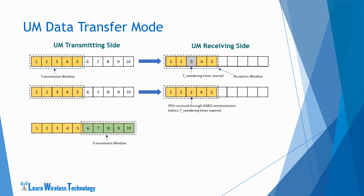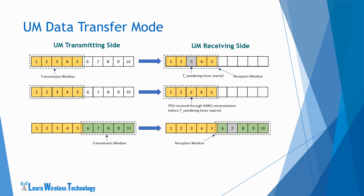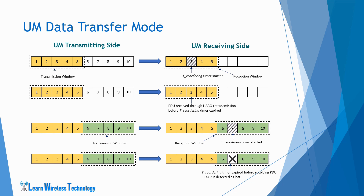The transmitter then transmits the remaining PDUs 6, 7, 8, 9, and 10 over a new transmission window. Suppose the receiver receives PDUs 6, 8, 9, and 10 and PDU 7 is missing. Similar to the previous case, the receiver starts the reordering timer for PDU 7. If the reordering timer expires before PDU 7 is received, the receiver detects PDU 7 as lost and forwards the rest of the PDUs for reassembly into SDUs and delivers them to the upper layer. Any PDU received again within the same reception window is discarded as a duplicate — this is the duplicate detection feature of RLC, where a PDU is identified by its sequence number.